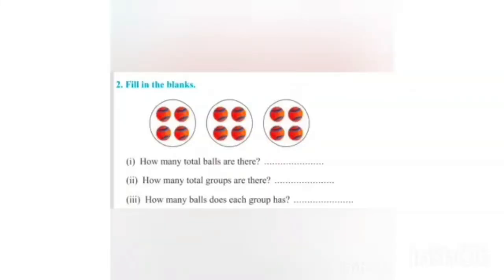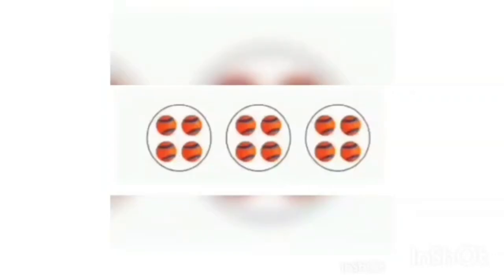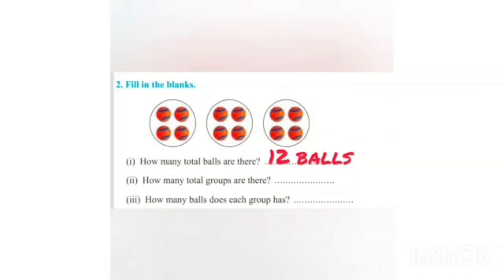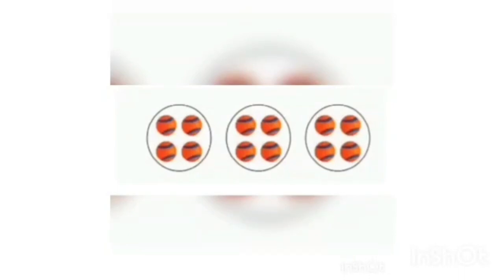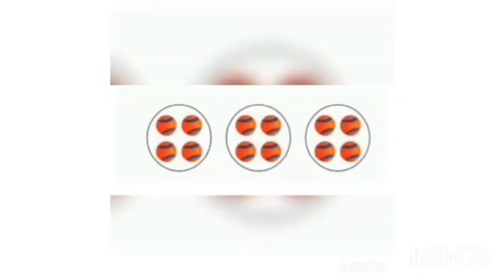Now the blanks. First part: how many total balls are there? Let's count the balls: 1, 2, 3, 4, 5, 6, 7, 8, 9, 10, 11, 12. The first answer is 12 balls. Second question: how many total groups are there in this picture? Each group is a circle with 4 balls. Let's count the groups: 1, 2, and 3. Total 3 groups are there; the second answer is 3 groups.